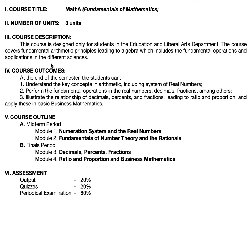Math A is given in the first year; GE10 is given in the second year. The course outcomes at the end of the semester are: one, understand the key concepts in arithmetic, including the real number system — which you will review again in College Algebra; two, perform the fundamental operations on real numbers, decimals, and fractions; and three, illustrate the relationship of decimals, percents, and fractions, leading to ratio and proportion, and apply these in basic business mathematics.